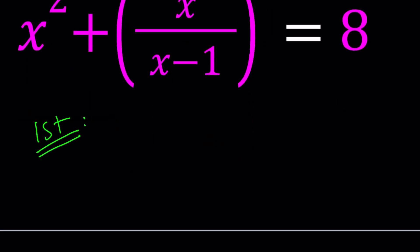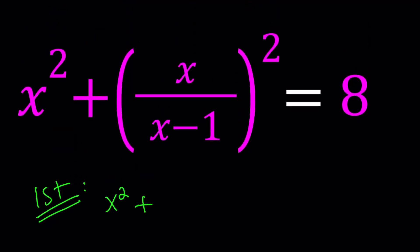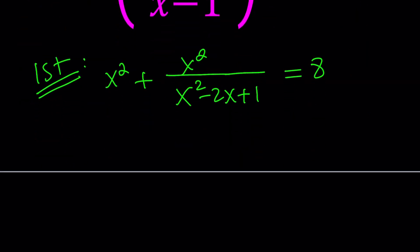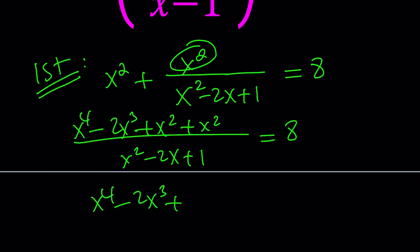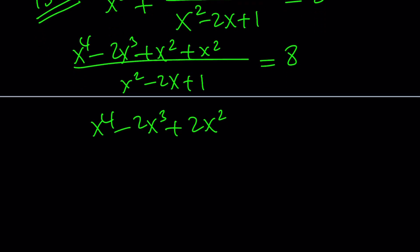For my first method, I'm going to go ahead and expand everything. I'll be getting x minus 1 quantity squared at the bottom, which I can write as x squared minus 2x plus 1. Then I'll make a common denominator to multiply everything by x squared. That's going to give me x to the fourth power minus 2x cubed plus x squared plus another x squared, all over x squared minus 2x plus 1, equals 8. Cross multiplying gives us 8x squared minus 16x plus 8.